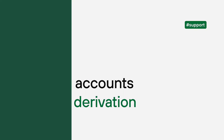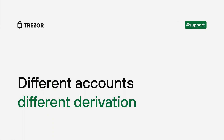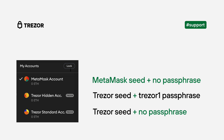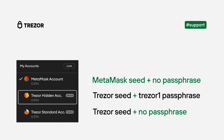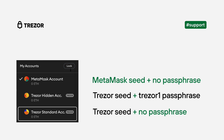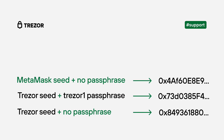Now let's have a look at what accounts we have. There is one MetaMask account generated from the MetaMask seed, and then we have two Trezor accounts, both derived from the same seed. However, look at the simplified derivation scheme — it's different for each wallet. The MetaMask account is derived from the MetaMask seed only, with no passphrase. The second account is generated from the Trezor seed and our secret passphrase. And the last account is derived from the same Trezor seed but without any passphrase. In the end, it just means generating different addresses.